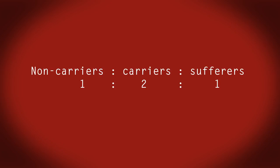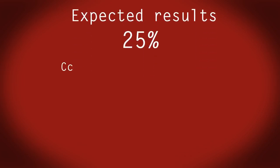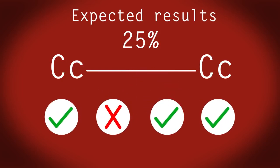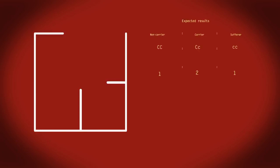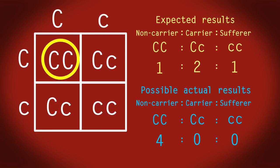But remember, these are just probabilities. We call these the expected results. So whilst we could expect that 25% of offspring of two cystic fibrosis carriers to suffer from the disease, it is a probability. The actual results may be different. Two carrier parents could potentially have four children that are all non-carrier CC genotypes.